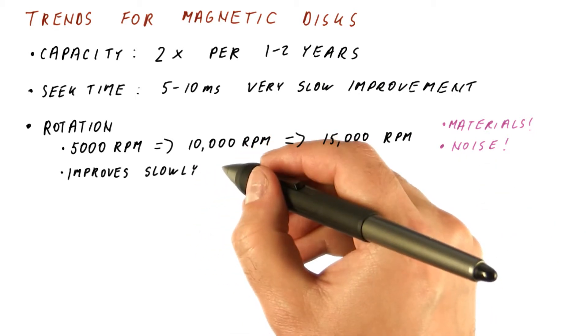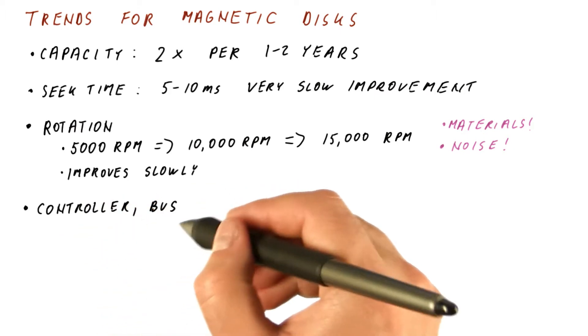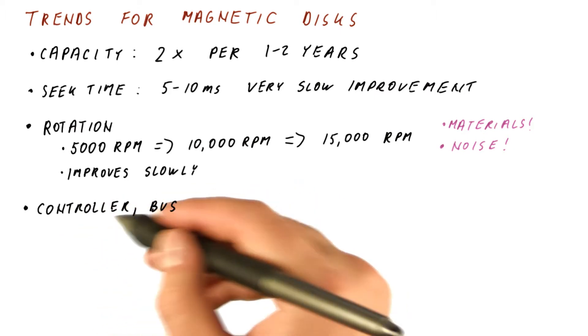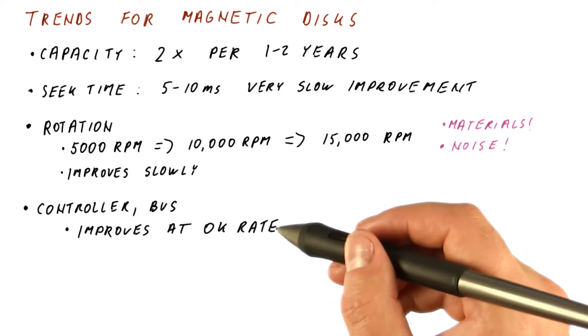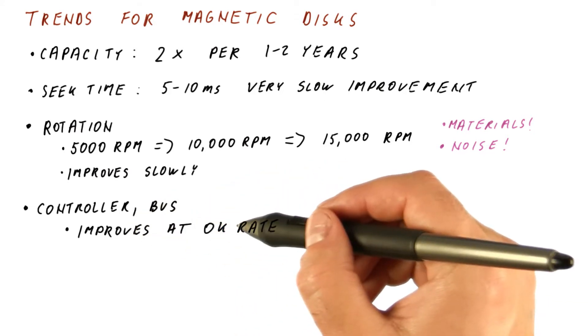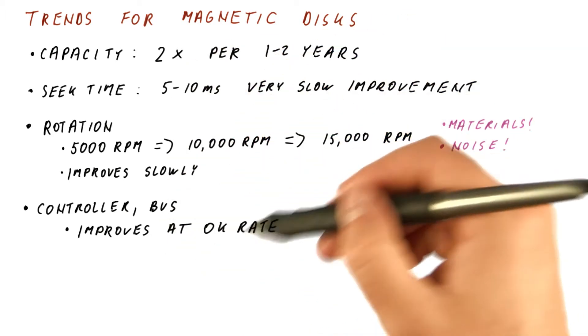And this type of improvement is also relatively slow. And the speed of disk controllers and the buses over which we transfer data has been improving at an okay rate. So really, the controller and the bus are becoming a smaller and smaller fraction of the overall disk access time.